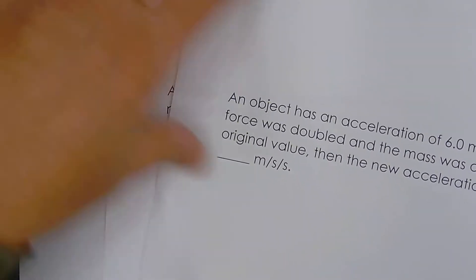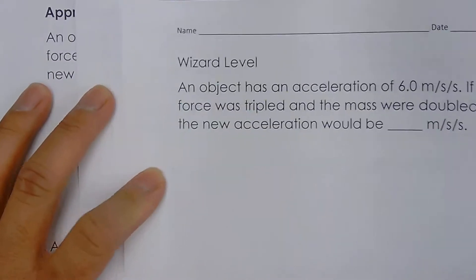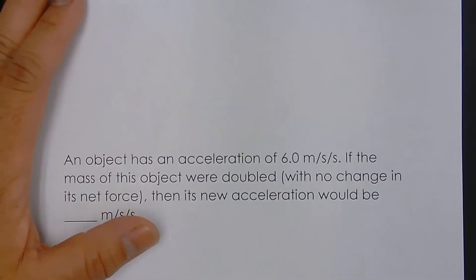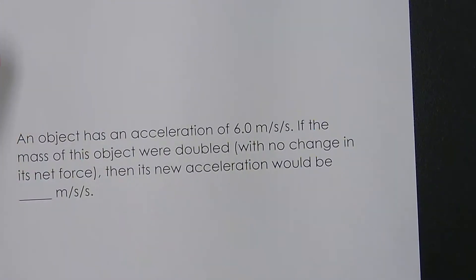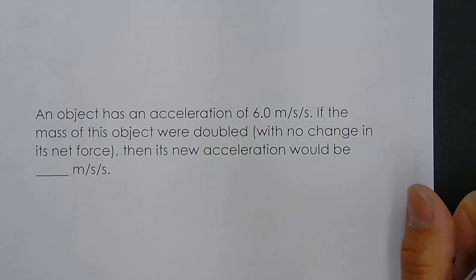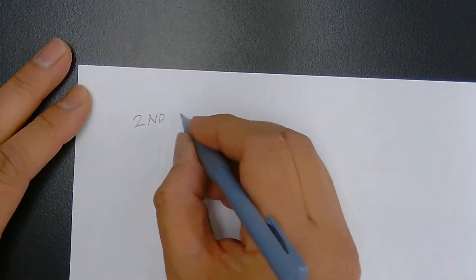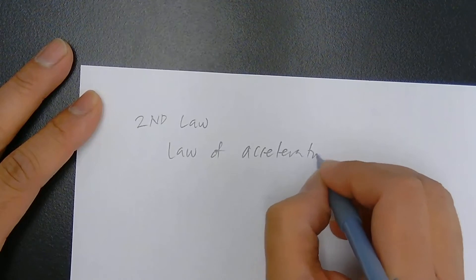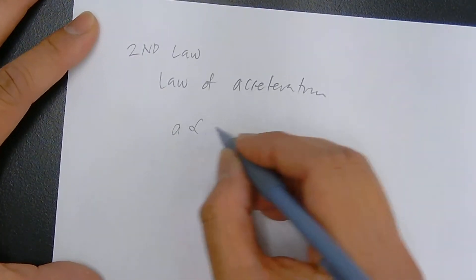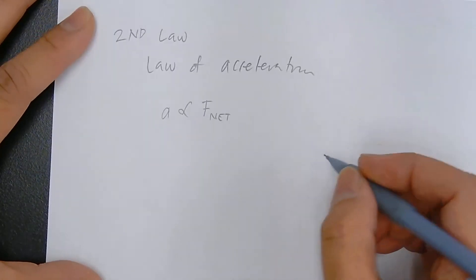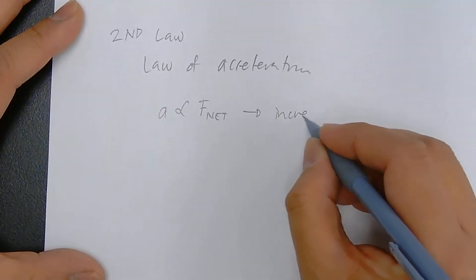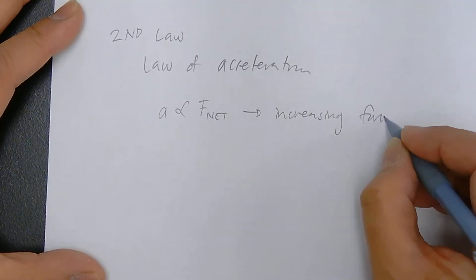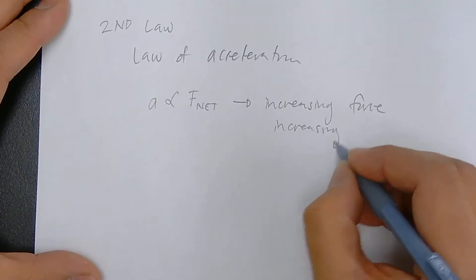So once you have these two trophies, the wizard is going to be just pretty easy. We know that we talk about acceleration and its relationship with force and with mass. The second law — called the law of acceleration — states that acceleration is directly related to the net force, which means if I increase force, I'm increasing acceleration.